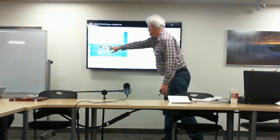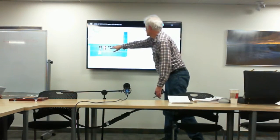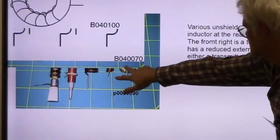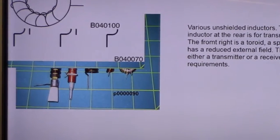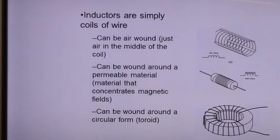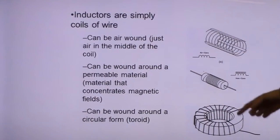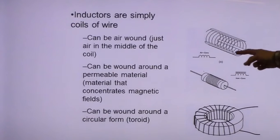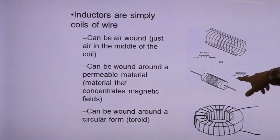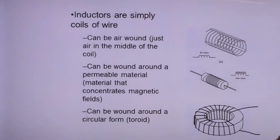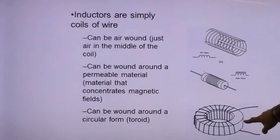Just a picture of various types of inductors. Inductors are simply coils of wire. An air-core inductor is just a coil of wire with air in the middle. An iron-core inductor has a metal iron core inside. This particular type wound in a circle is referred to as a toroid.